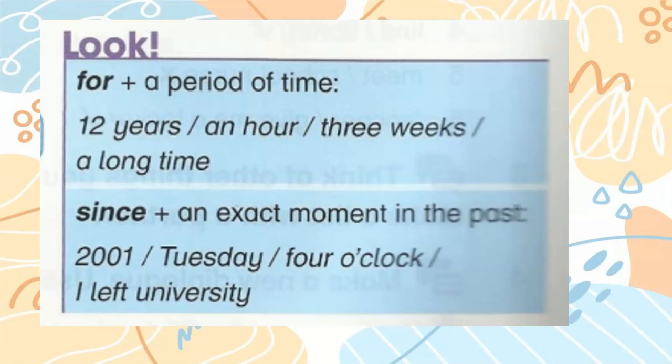Look. For — a period of time: 12 years, an hour, 3 weeks, a long time. Since — plus an exact moment in the past: 2001, Tuesday, 4 o'clock, I left university.